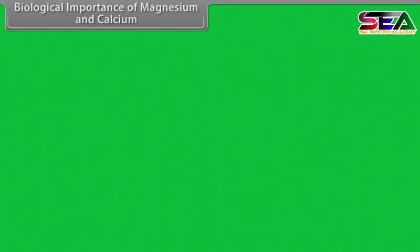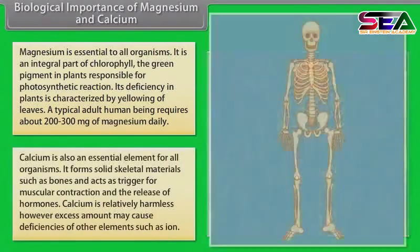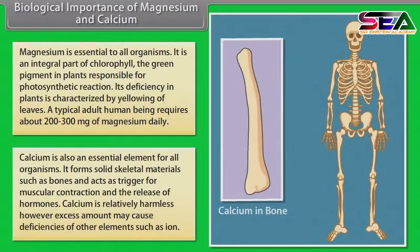Magnesium is essential to all organisms. It is an integral part of chlorophyll, the green pigment in plants responsible for photosynthetic reactions. Its deficiency in plants is characterized by yellowing of leaves. A typical adult requires about 200–300 mg of magnesium daily. Calcium is also essential for all organisms. It forms solid skeletal materials such as bones and acts as a trigger for muscular contraction and the release of hormones. Excess calcium may cause deficiencies of other elements such as iron.